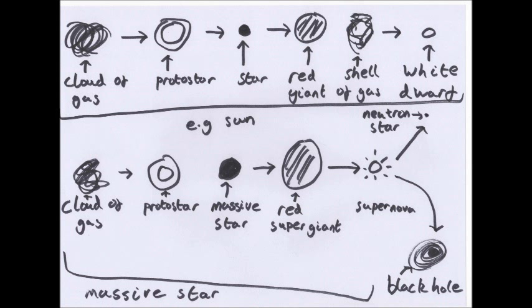Massive stars start the same way — cloud of gas, protostar — but then form a massive star. They fuse hydrogen to helium quickly and become red supergiants. At the end of the red supergiant period, the star rapidly collapses and then explodes in an event called a supernova, where the outer layers are cast off and expand outward. What remains is either a black hole — if it's really massive, where not even light can escape — or, if not massive enough, gravity pulls the remains together to form a small, very dense neutron star.